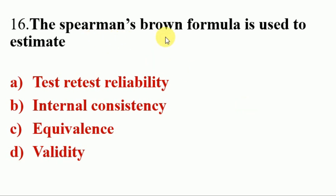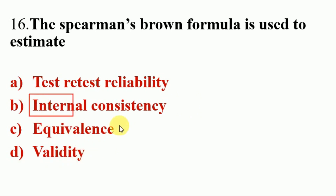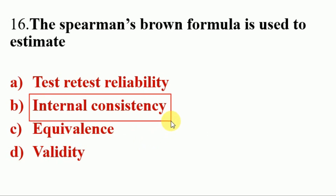Next question. The Spearman's Brown formula is used to estimate — Options A. Test-retest reliability, B. Internal consistency, C. Equivalence, D. Validity. Answer is B. Internal consistency. So the Spearman's Brown formula is used to estimate Internal consistency.